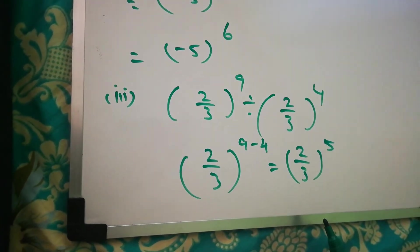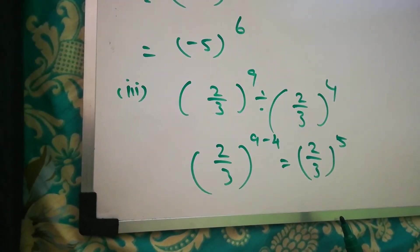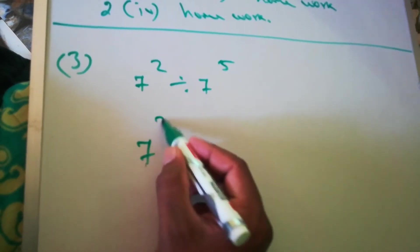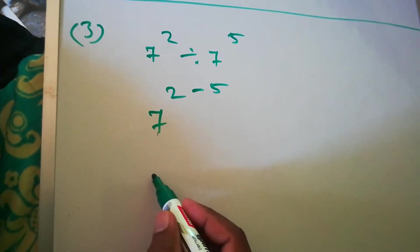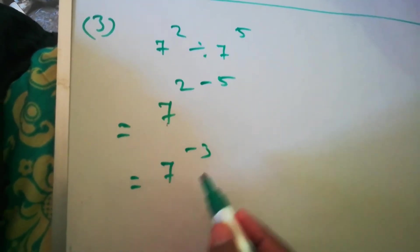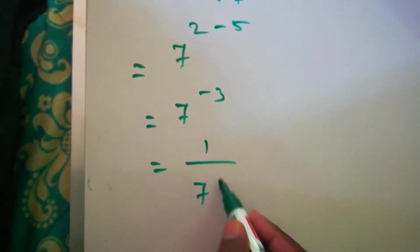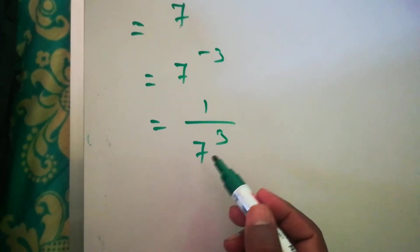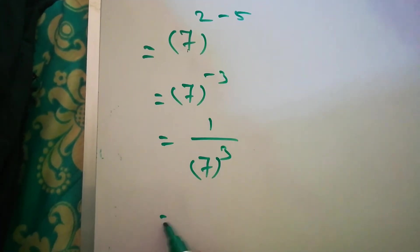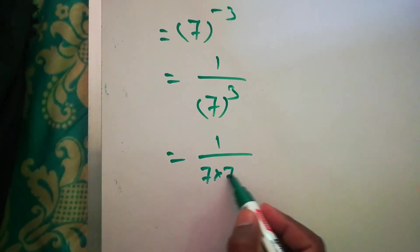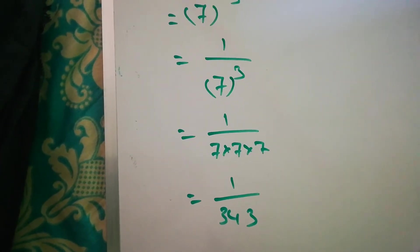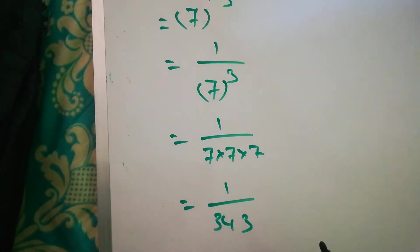So (2/3)^(9−4) = (2/3)^5. The last question of this set is homework. Now question number 3: 7^2 divided by 7^5 means 7^(2−5) = 7^(−3). A negative exponent means we write the reciprocal: 1/7^3. Negative becomes positive when we flip it, so 1/7^3 = 1/(7×7×7) = 1/343.